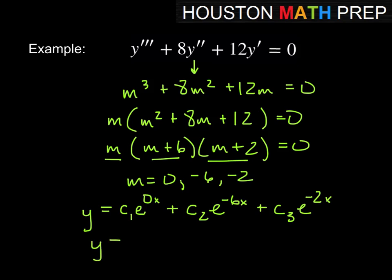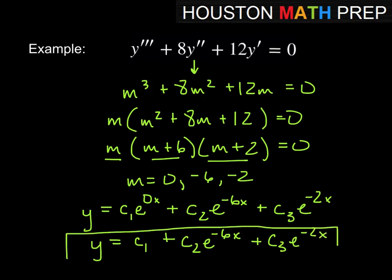So really, I think we would probably just write this as y equals c1 plus c2 e to the minus 6x plus c3 e to the minus 2x. And that would be the nicer way to write that. So if we ever come across m is equal to 0, I think we'll go ahead and use that just c1 instead of e to the 0x. It's much nicer there.